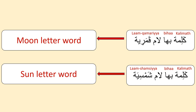Next: 'kalima bihā lām qamariyya' meaning moon letter word, and 'kalima bihā lām shamsiyya' meaning sun letter word. I already explained moon letters and sun letters in my previous video part 6.